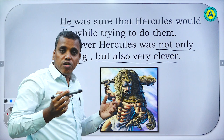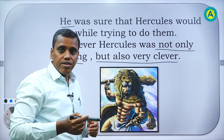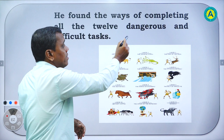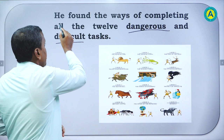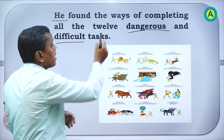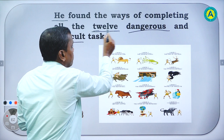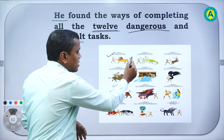He was physically strong and also mentally very clever. He found the ways of completing all the 12 dangerous and difficult tasks. Hercules was given many tasks and he found the ways — he found different ways because he was clever. He was given 12 tasks. Different tasks were given to him, like fighting with a lion, different kinds of beasts, different kinds of animals who were very large and strong.